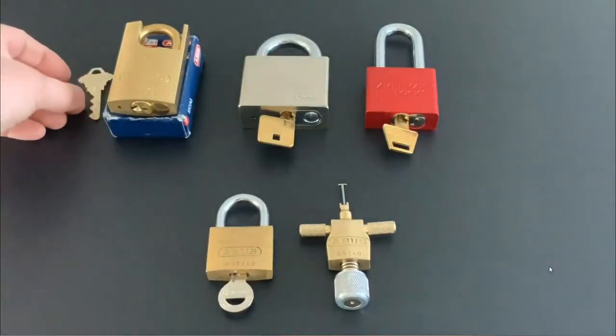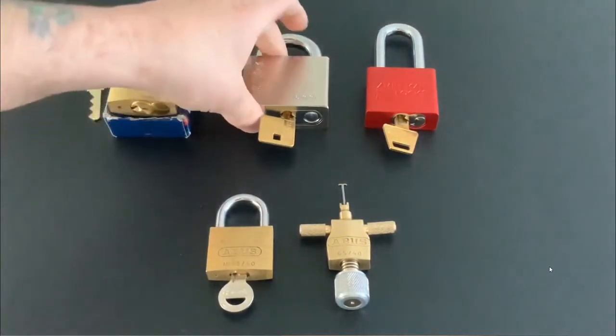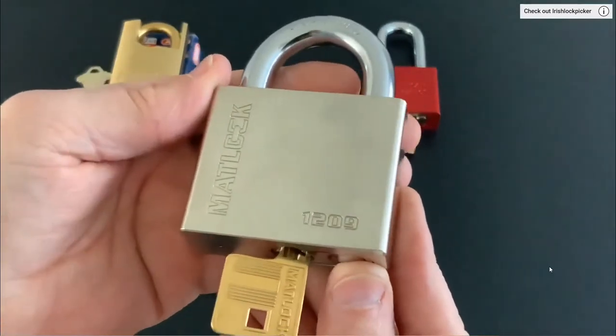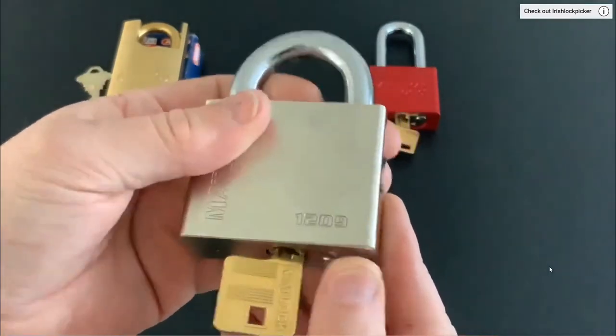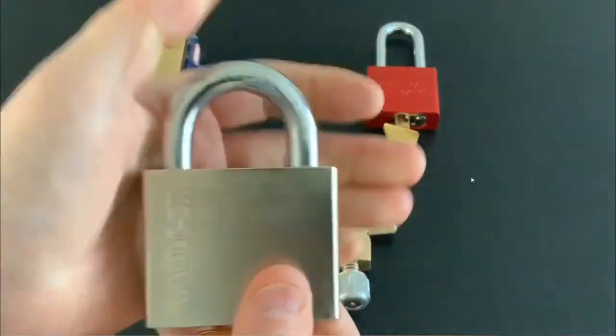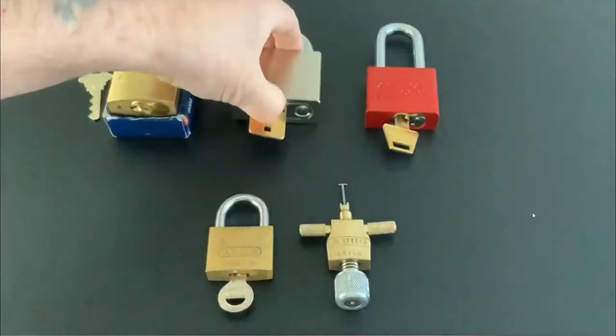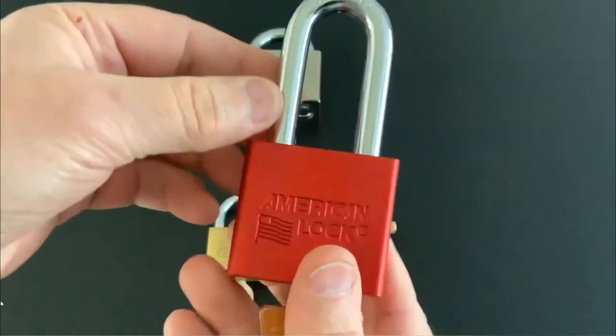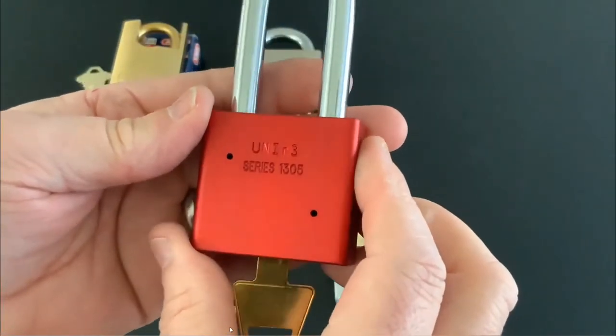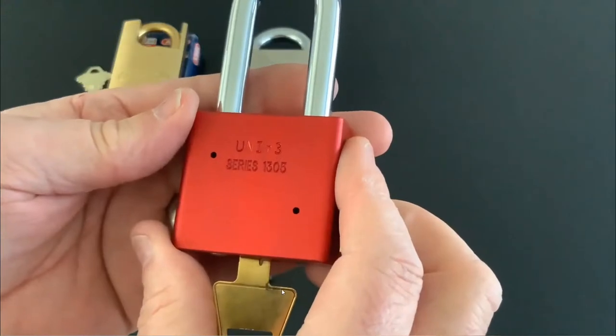Secondly I had another couple of locks sent to me from the Irish lock picker. Two lovely locks. This first one is a Matlock 1209. Beautiful lock. And then the second one is an American 1300 series. I've got a couple of 1100s but I've not got a 1300.